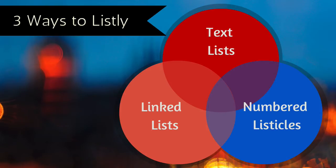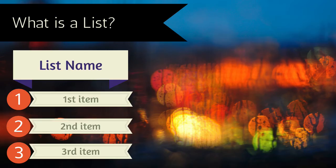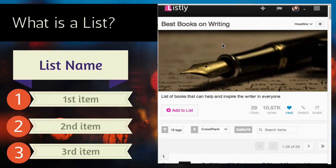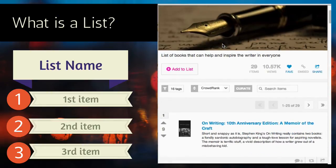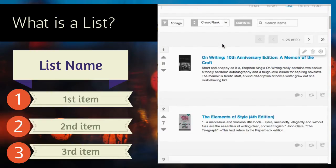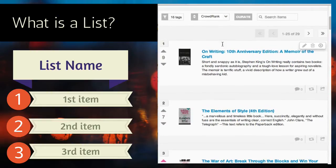Welcome to this introduction to three ways to use Listly with text lists, linked lists, and numbered listicles. First, let's take a look at lists and then have a look at what a list looks like on Listly. On Listly, a list is simply a name and a collection of ordered items. Here's an example scrolling through a list on Listly.